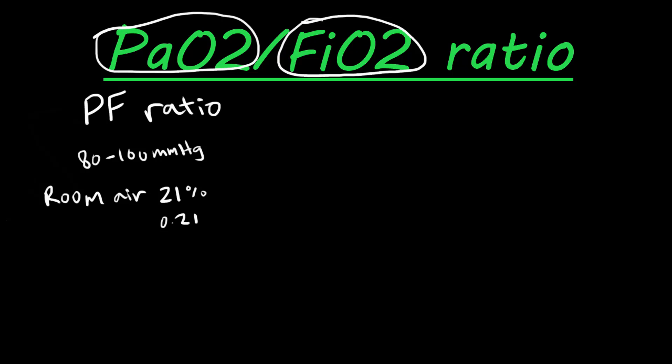To get this ratio, all we have to do is take their PaO2 level divided by the fraction of inspired oxygen. So let's say we have someone with a PaO2 of 90 divided by 0.21 — let's say they're on room air. That gives us a PF ratio of about 429, and this is a normal PF ratio.